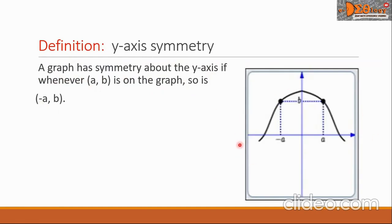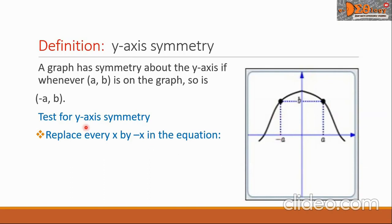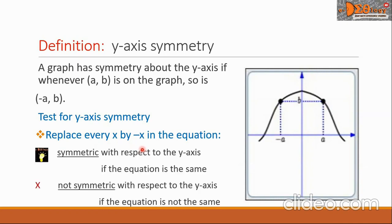We have a figure here — this is our y-axis. The point (a, b) is here while the point (-a, b) is here. We can observe symmetry with respect to the y-axis on the graph. To test for y-axis symmetry in the equation, we will replace every x by negative x. We say it is symmetric with respect to the y-axis if the equation is the same, or not symmetric if the equation is not the same.